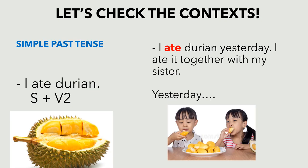The next context uses simple past tense: 'I ate durian.' I'm talking about what happened yesterday. I ate durian yesterday, and I ate it together with my sister. I'm talking only about something that happened yesterday, not about the relation of yesterday's activity to the present situation. That's why we use simple past tense.